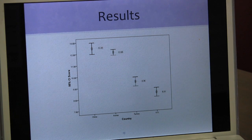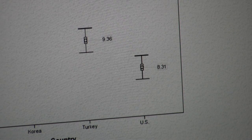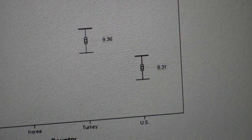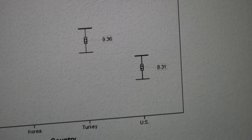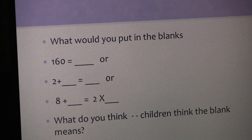What we found out is that the problem with the equal sign is pretty much a U.S. problem. One of the bigger issues is that our textbooks in the United States don't prepare students with a variety of problems that are conducive to learning about the equal sign as equivalence. Instead, they learn about it as an operator symbol, kind of like when you punch the equal sign on a calculator.